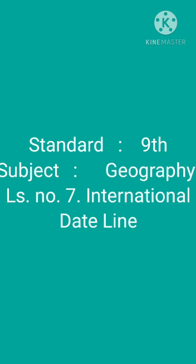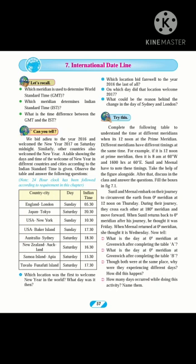Standard 9 Subject Geography Lesson No. 7: International Date Line. Dear students, we should understand what is the International Date Line. The International Date Line is an imaginary line drawn opposite to the Greenwich Prime Meridian, that is, with reference to the 180 degree meridian.